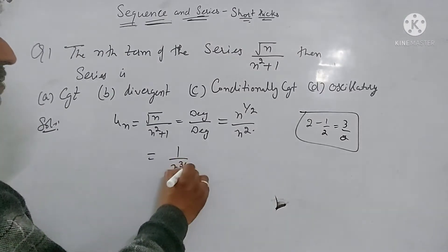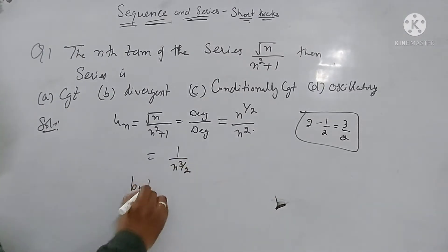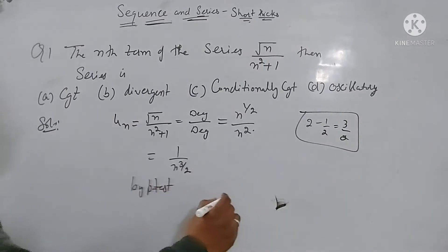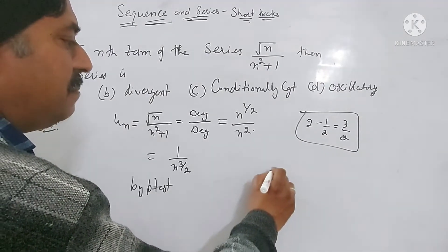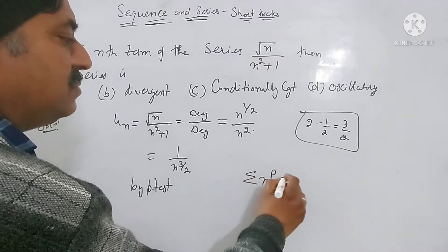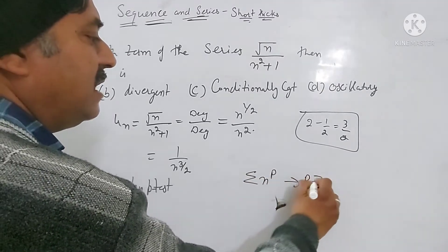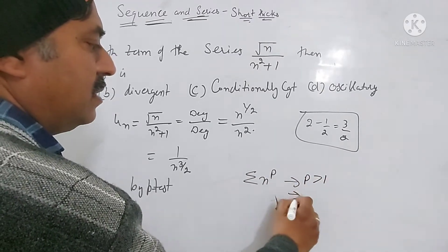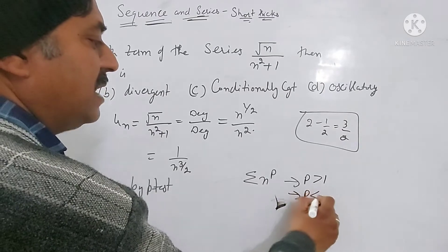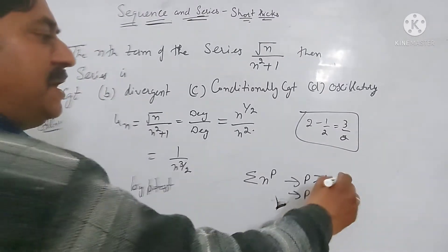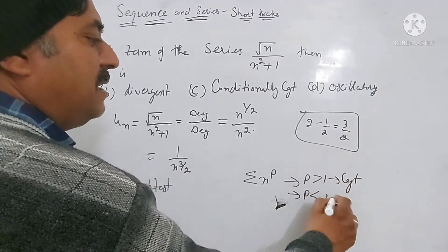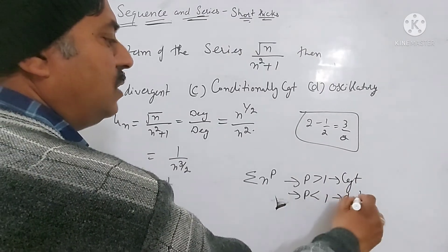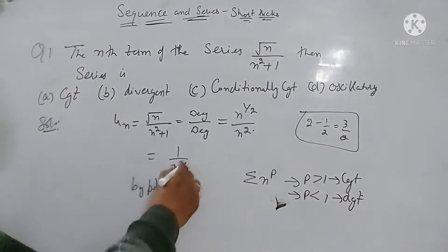By the P-test: the P-test states that for the series summation 1/n^P, if P is greater than 1 the series is convergent, and if P is less than 1 the series is divergent. These are the two conditions of the P-test.